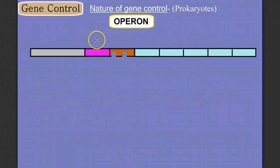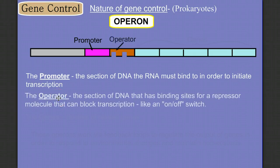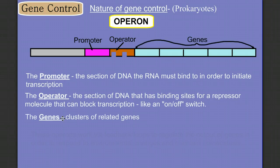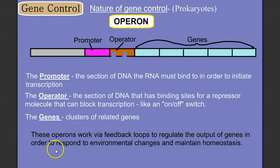Let's take a closer look at the operon. Here's a section of DNA. The operon includes the promoter region — the section of DNA that RNA polymerase binds to in order to initiate transcription — and the operator, a section of DNA that has a binding site for a repressor molecule that can block transcription. It's kind of like our on-off switch. And then there's a cluster of related genes. These operons work via feedback loops to regulate gene output in response to environmental changes to maintain homeostasis.